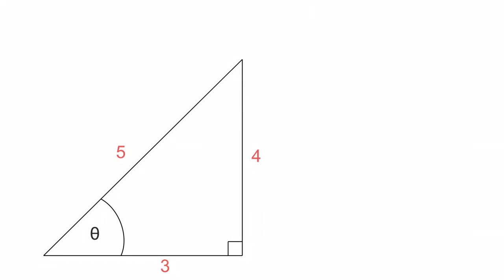Let's start out with sine. The sine of this angle is equal to our opposite over our hypotenuse, so sine theta is equal to 4 over 5. The sine of theta is equal to 4 divided by 5, which is 0.8.